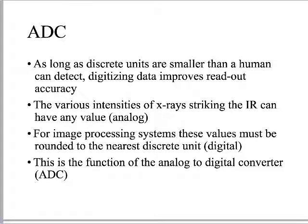If I store analog data, I have to store the entire continuous wave. But if I convert it to discrete digital data, I have much more processing power over it — because the computer speaks discrete and understands discrete concepts. The various intensities of X-rays can have any value — that's an analog transmission — but for digital imaging systems, we need those values converted to discrete units very quickly. That is the job of the ADC — the analog-to-digital converter — a computer embedded in imaging systems whose sole job is to take trillions of analog interactions and produce discrete numbers from them.